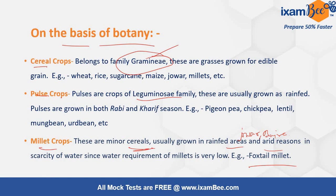Pulse crop examples are pigeon pea, chickpea, lentil, moong bean, and urad bean. These all belong to the family Leguminaceae — remember that. They can be grown in both seasons.